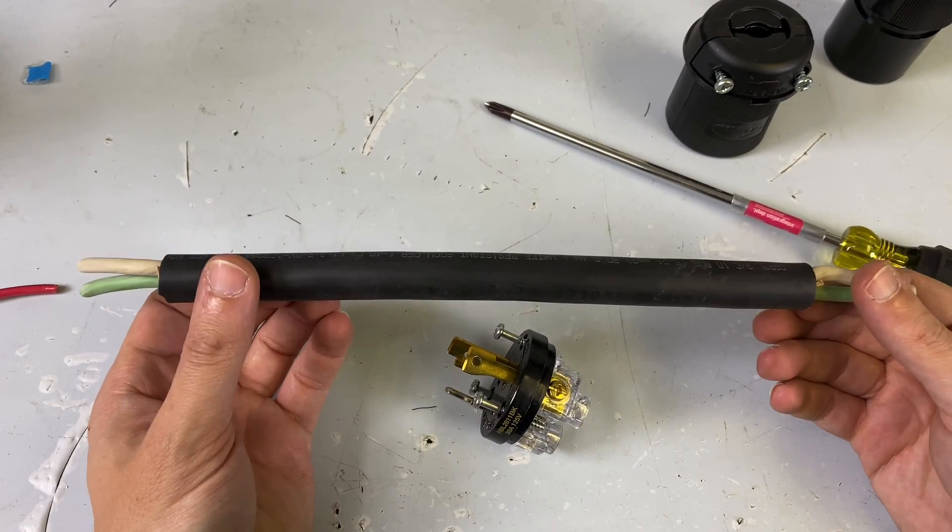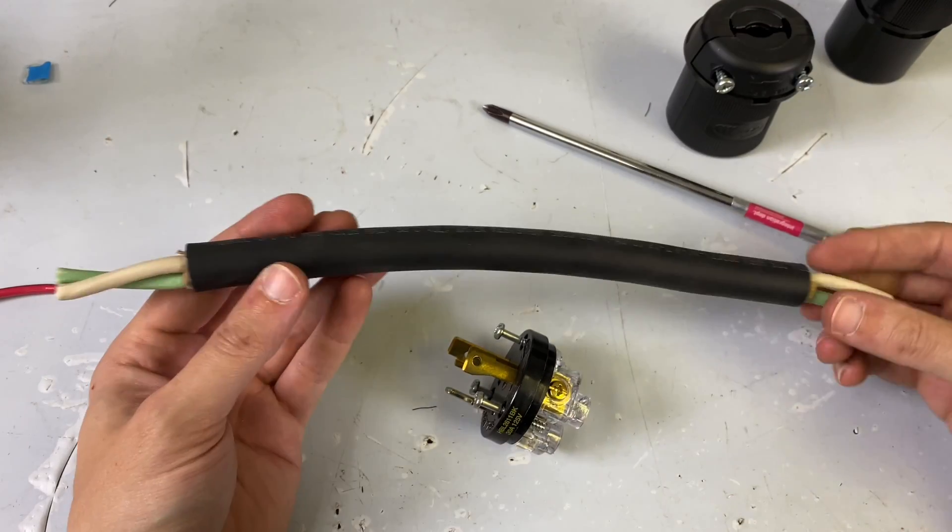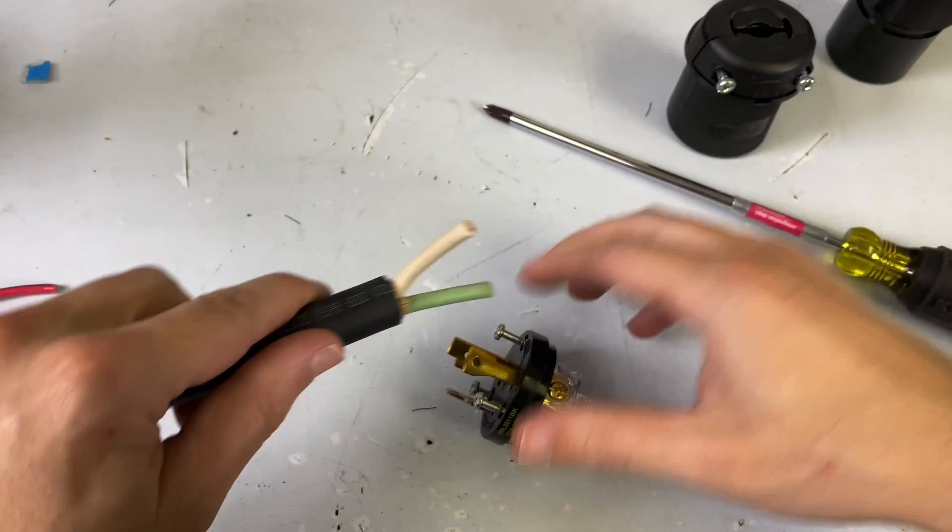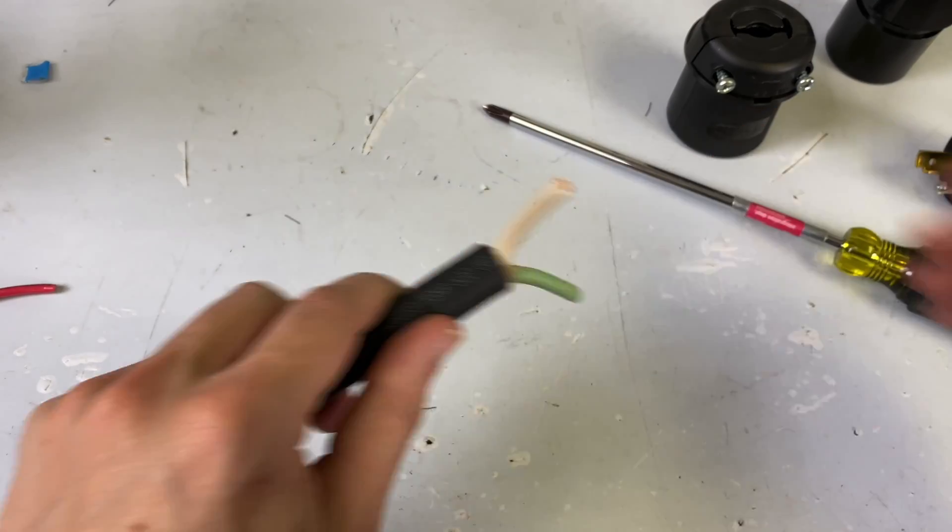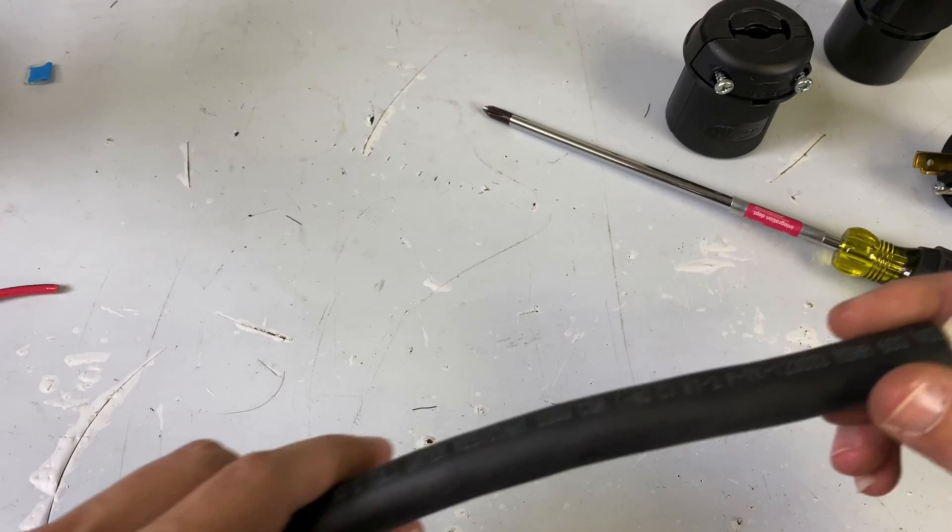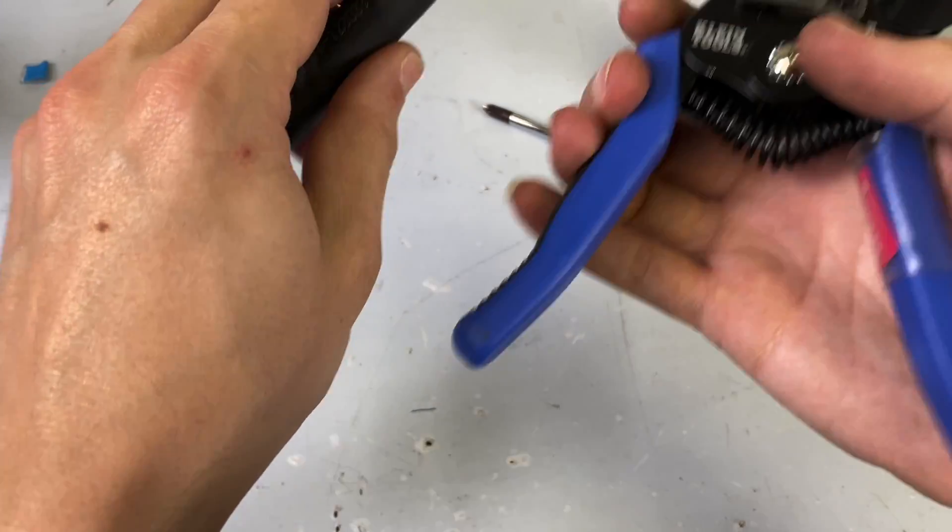So what we're going to do with this is I have a piece of SJO cable, which is code for S is submersible. And the other portions of that acronym are, I know that one of the O's is oil resistance, but I can't remember what the other parts of it are.